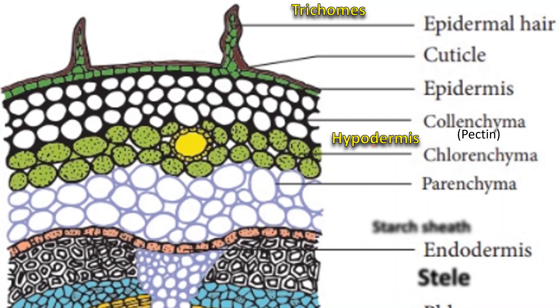Below hypodermis, we can see chlorenchymatous cells which help in photosynthesis, followed by loosely arranged parenchymatous cells. These parenchymatous cells store starch.